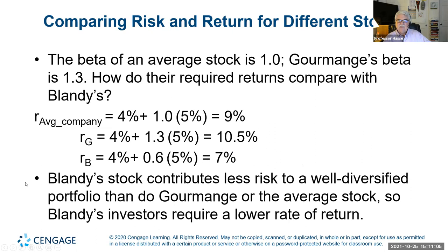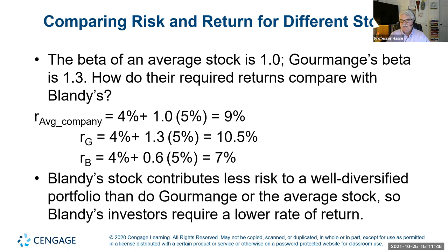Notice how beta changes the required return: at beta 0.6 the requirement is 7%; at beta 1.0 it rises to 9%; at beta 1.3 it's 10.5%. The higher the risk of a company, the more expensive and higher the return required to attract capital and keep investors happy. That's why risk management is so important in corporate finance — companies don't want bad debt or poor-performing assets because that drives up beta and makes their money more expensive.